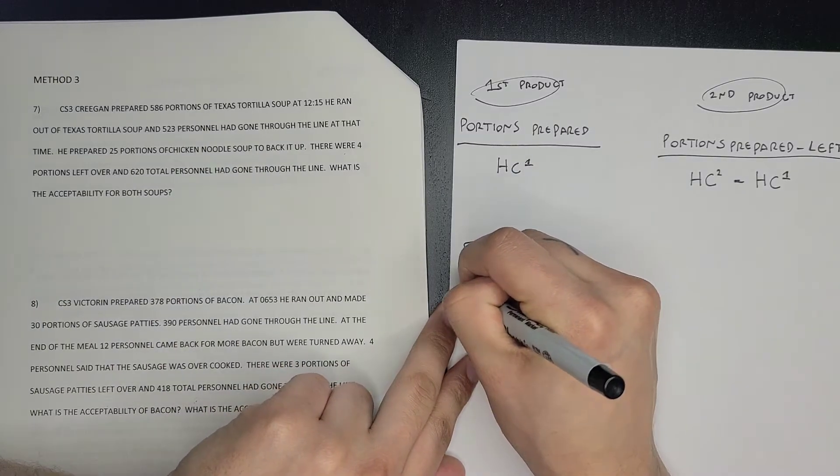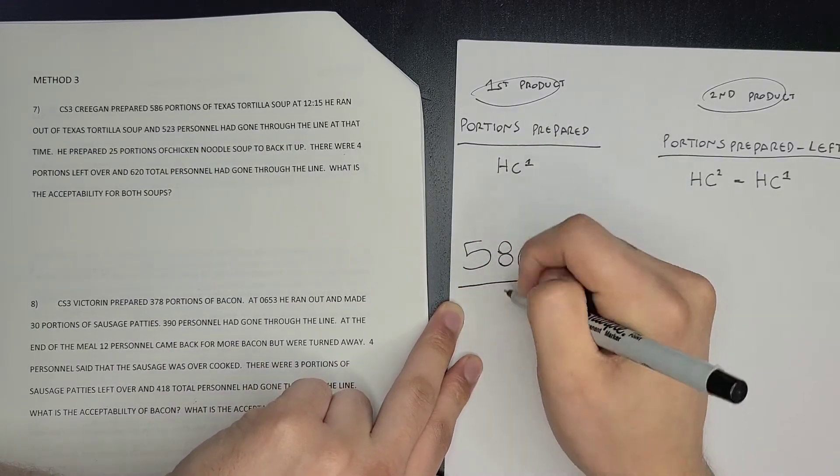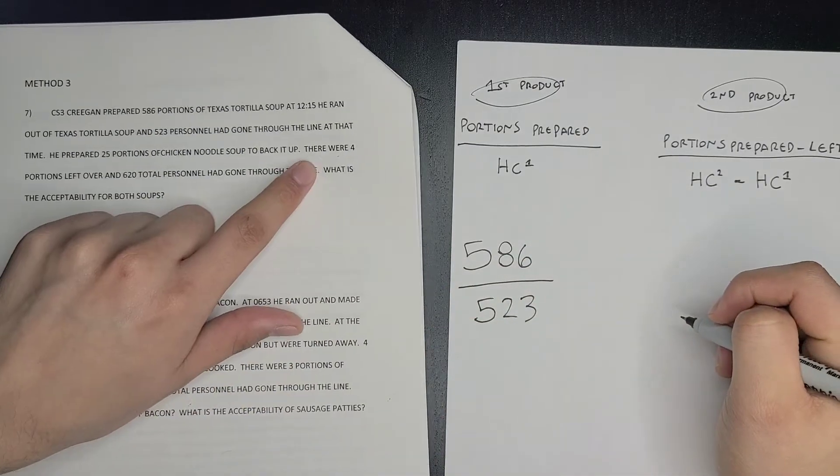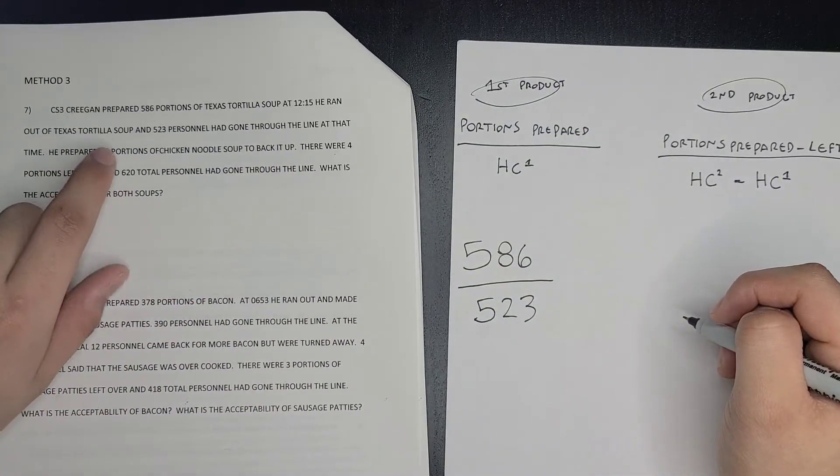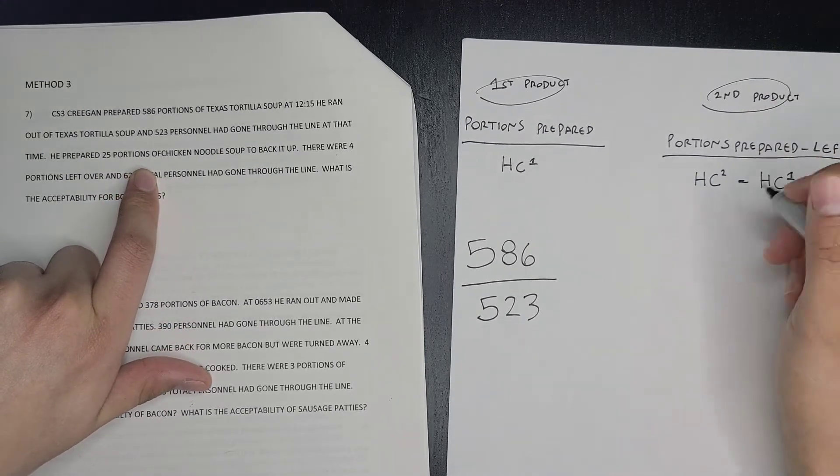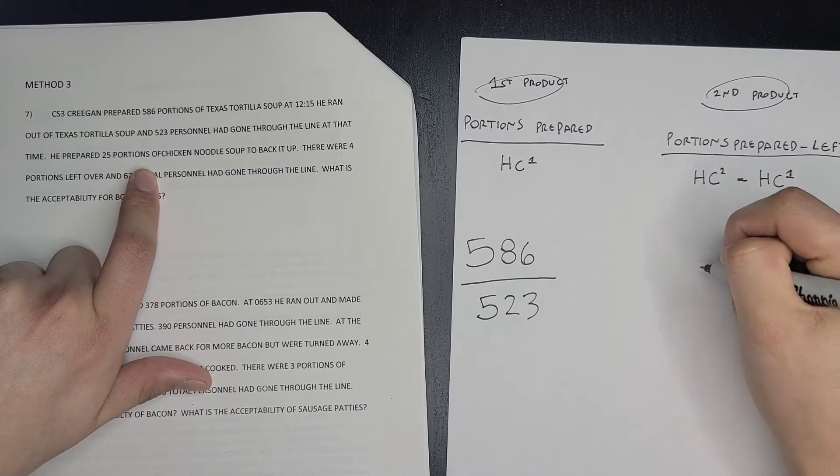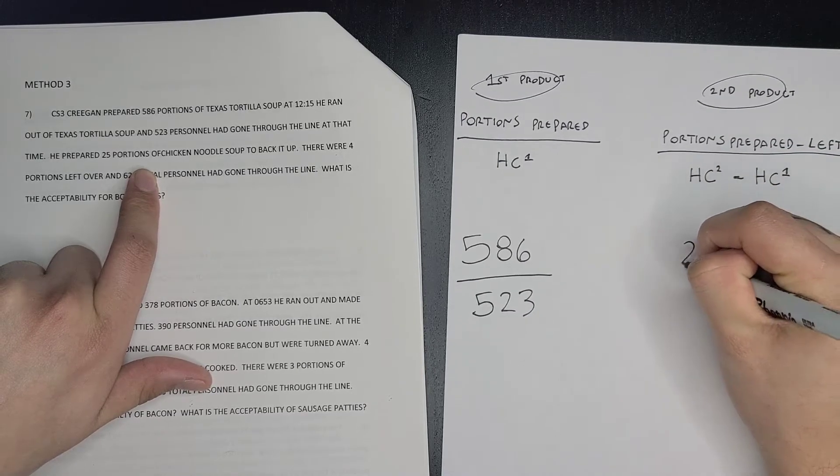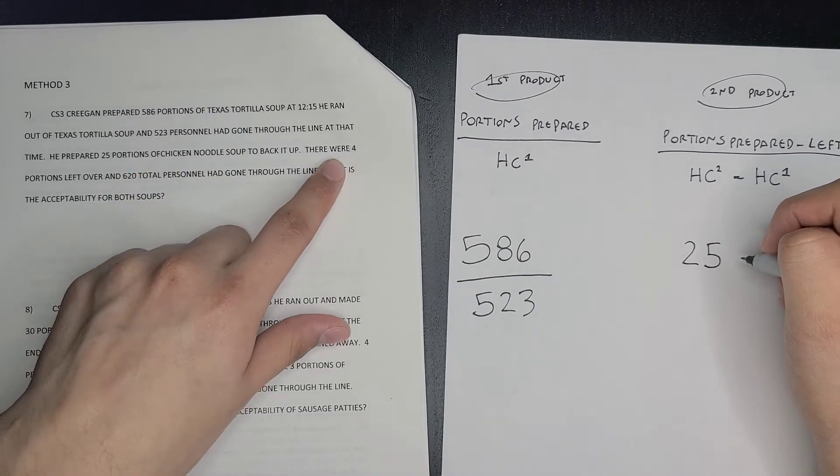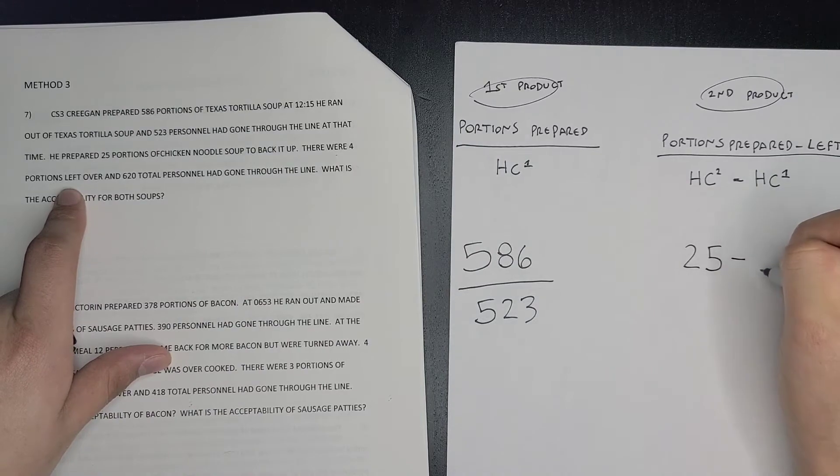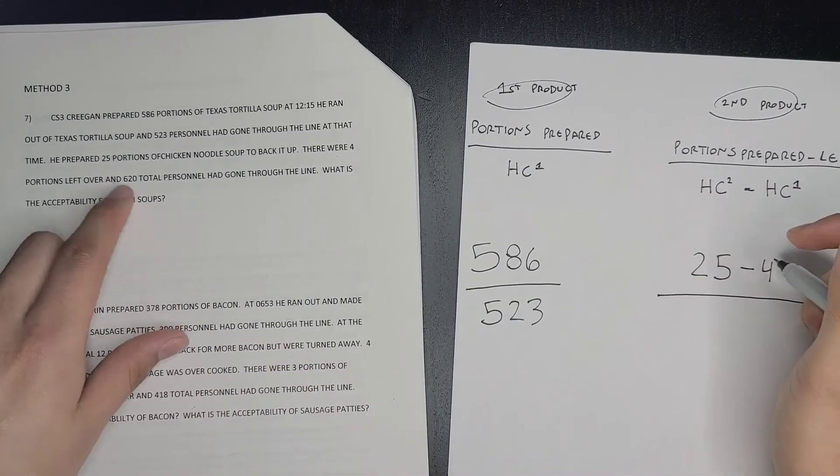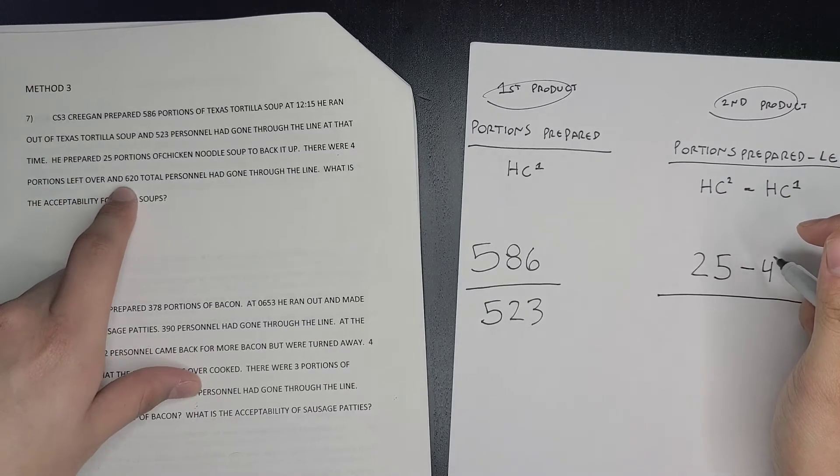That 523 is going to be your first head count. He prepared 25 portions of chicken noodle soup, so that's your second product. It's going to be on this formula, so you got 25 portions of chicken noodle soup. There were four portions left over.